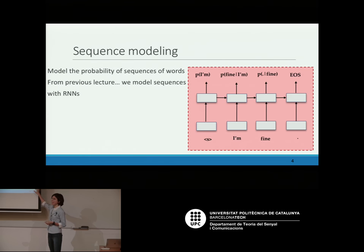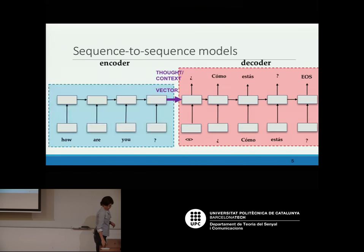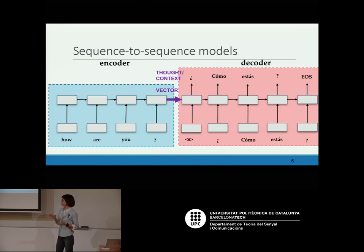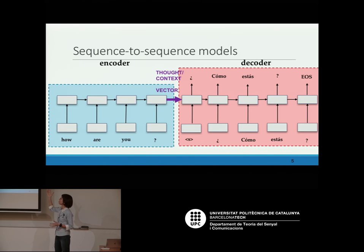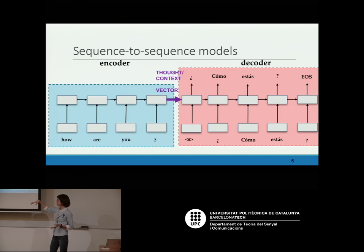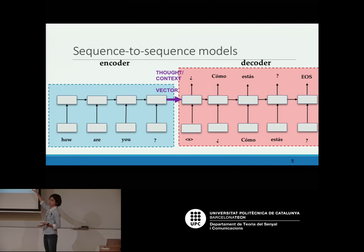Text prediction — or language modeling. We can do language modeling with recurrent models, but we can also do sequence-to-sequence, where we have an input sequence that is different from the output sequence. That is machine translation. What we are doing is modeling the input sequence into a fixed-length vector, and this fixed-length vector is the input of the second recurrent neural network that acts as a decoder and translates.